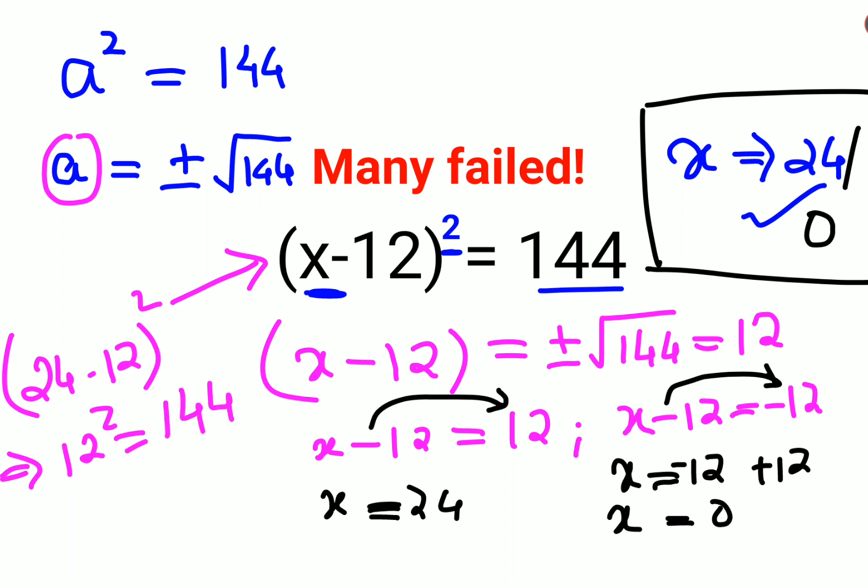Now instead of 24, let's put the value of x as 0. So 0 minus 12 whole squared, that is basically minus 12 squared.